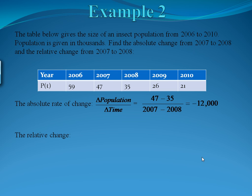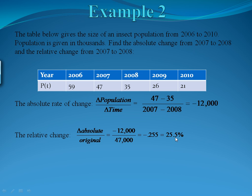Now the relative change is our absolute rate of change divided by the size of the initial population. We decreased by 12,000, so negative 12,000 divided by the initial population in 2007, which was 47,000. When you divide these, you get negative 0.255, indicating a change of 25.5%. Because of that negative sign, we say the population decreased 25.5% from 2007 to 2008.